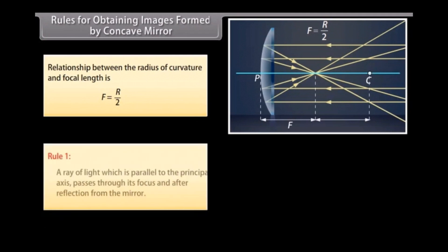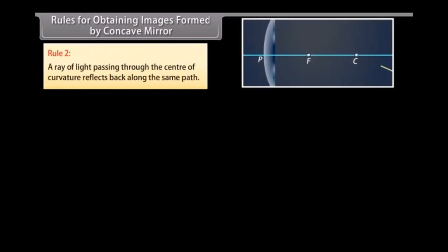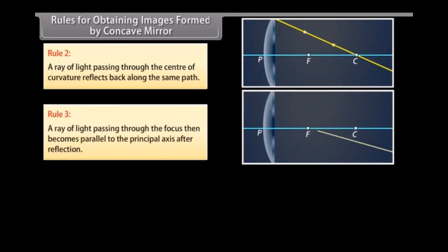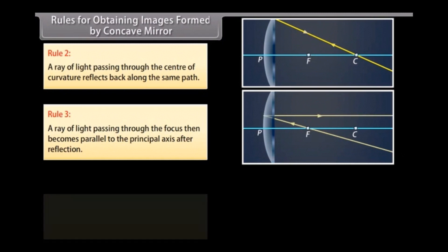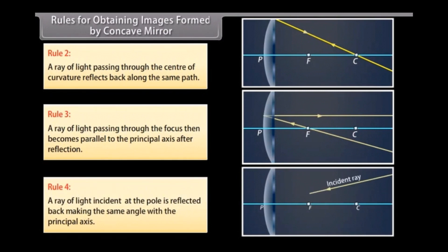Rule 1: A ray of light parallel to the principal axis passes through the focus after reflection from the mirror. Rule 2: A ray of light passing through the center of curvature reflects back along the same path. Rule 3: A ray of light passing through the focus becomes parallel to the principal axis after reflection.